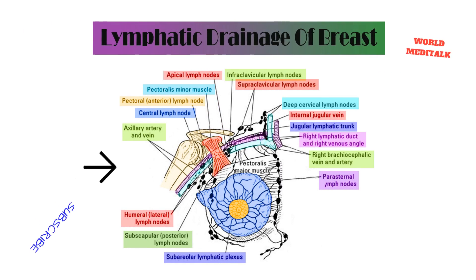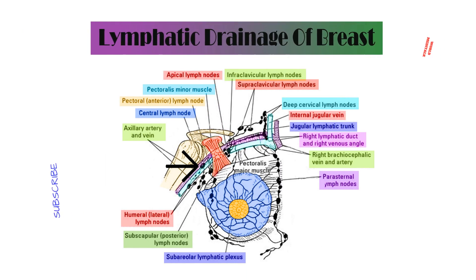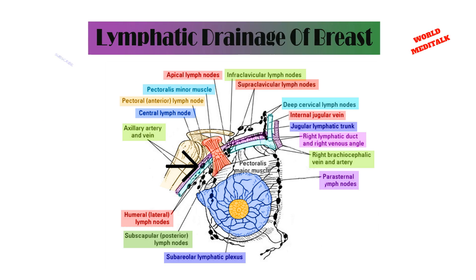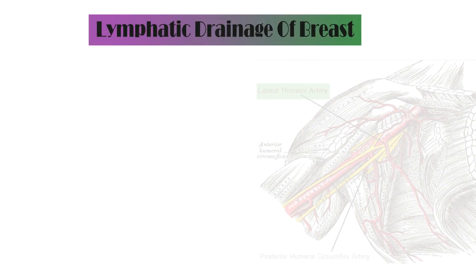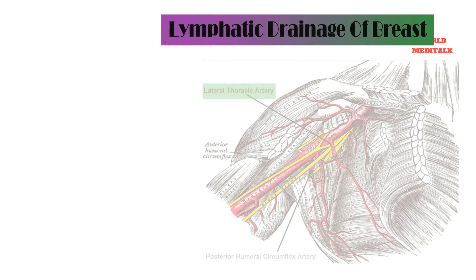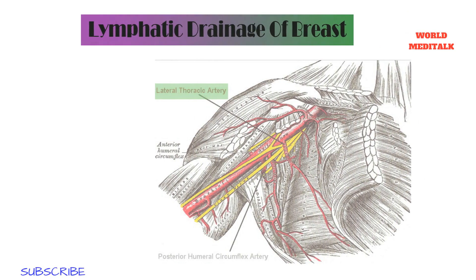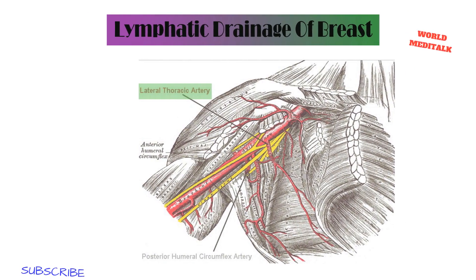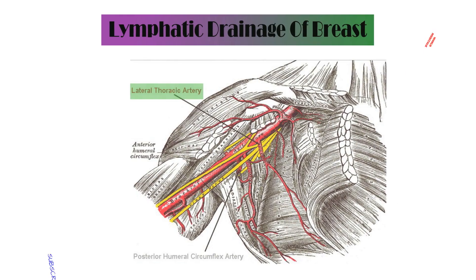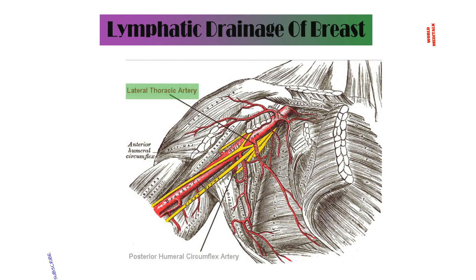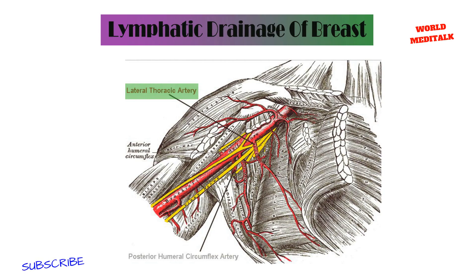The lymphatic drainage of the breast is very important to know because it is involved in carcinoma of the breast. The first group is the anterior pectoral or external mammary group of lymph nodes. This group lies in relationship with the lateral thoracic vessels, which is a branch of the axillary artery.